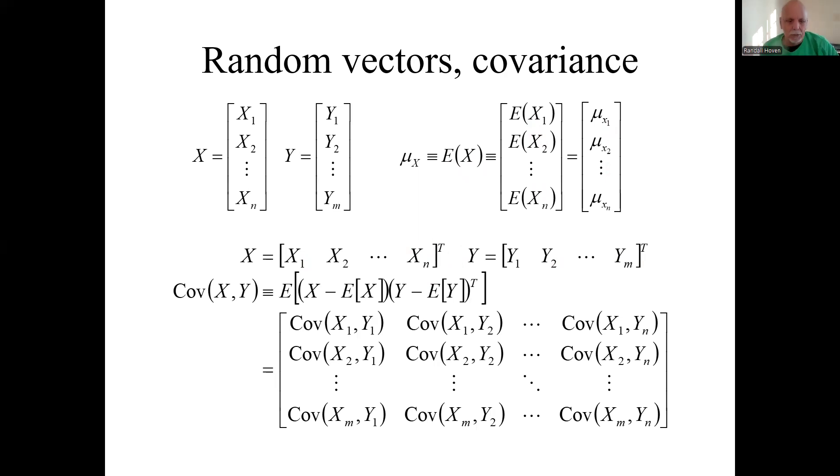You need to know a little bit about matrices. The covariance of two random vectors: before it was just a simple covariance between scalar random variables, this product. Now we put this transpose here, so this will be a column vector and this will be a row vector. When you multiply them you get a matrix. It's all these individual covariances between individual random variables, but this tells you how to lay them out in a matrix.